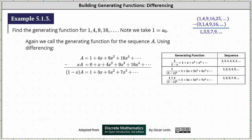Recall from the previous lesson, we found the generating function for the sequence 1, 3, 5, 7, 9, ... to be the quantity 1 plus x divided by the square of the quantity 1 minus x.